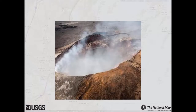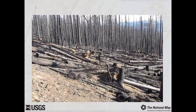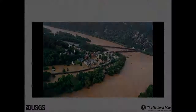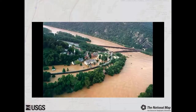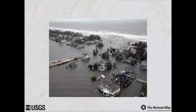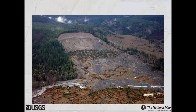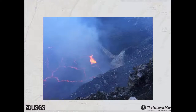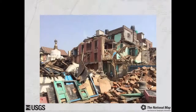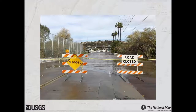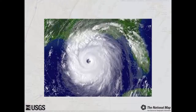Remotely sensed datasets such as satellite imagery and aerial photography can be invaluable resources to support the response to and recovery from emergency events such as floods, earthquakes, landslides, wildfires, and other natural or human-induced disasters. When disaster strikes, there is often an urgent need and high demand for coordinated, rapid acquisition and distribution of pre- and post-event geospatial products and remotely sensed images.